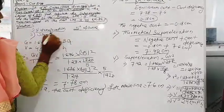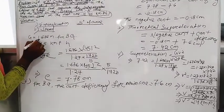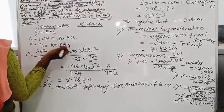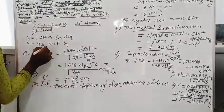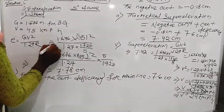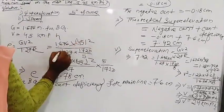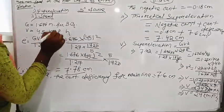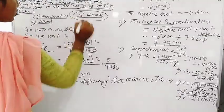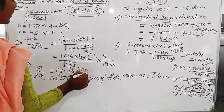To summarize the calculation: G = 1.676 m for broad gauge. The speed on the main line is 45 km per hour. The super elevation E = 1.676 × 45² / (1.27 × 1720/5), calculated for the 5-degree main curve, gives 7.78 cm.